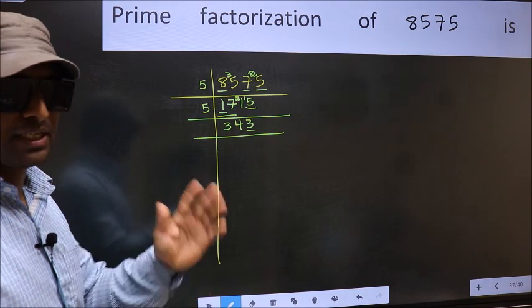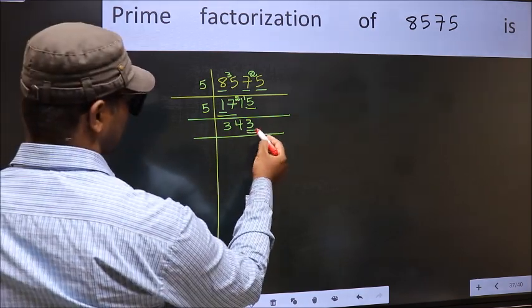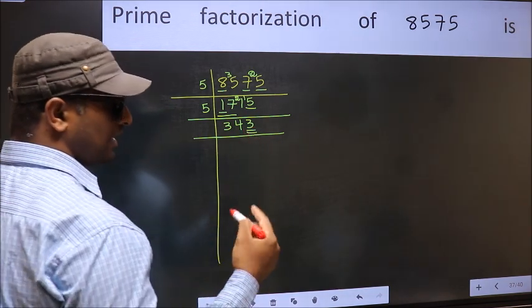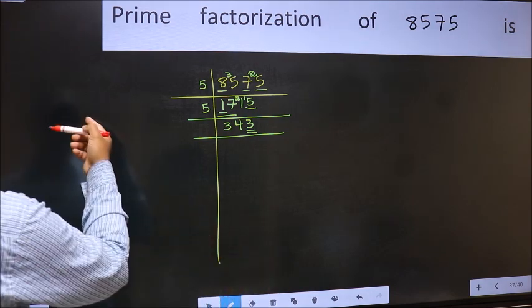Next prime number, 5. Last digit is neither 0 nor 5, so this is not divisible by 5. Next prime number, 7. Let us check divisibility by 7 here.